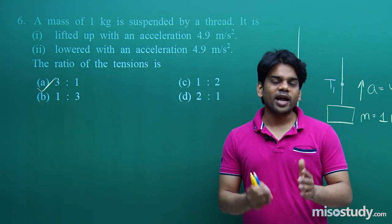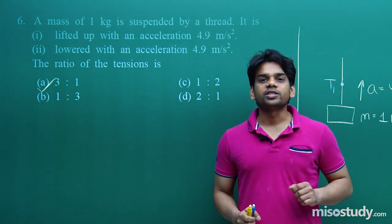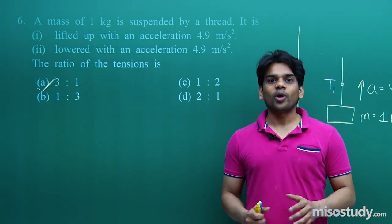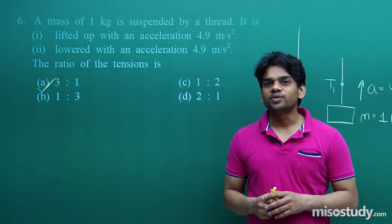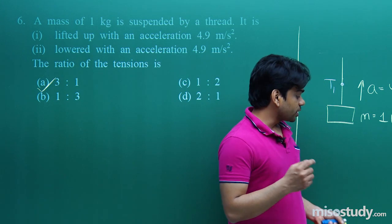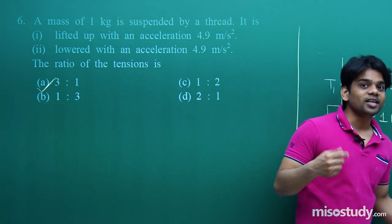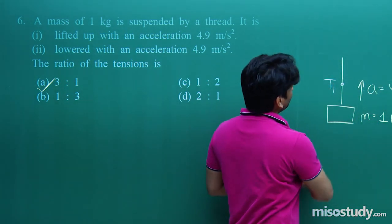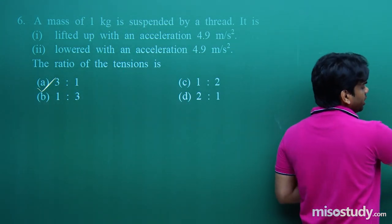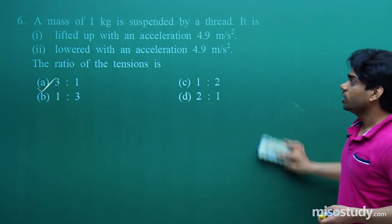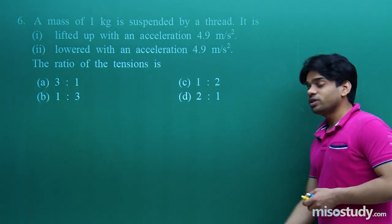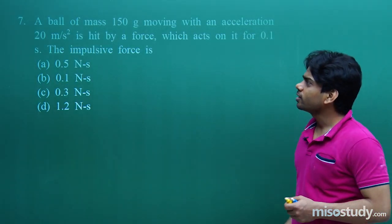While calculating tensions, remember: while going up, tension is m(g + a); while coming down, tension is m(g − a). Remembering this will help you directly switch to the solution without following more steps. Once you practice more problems, you will directly use these equations to reach the result.